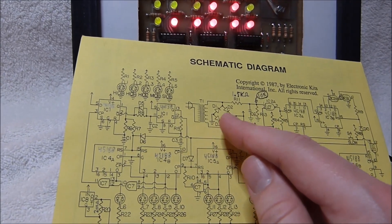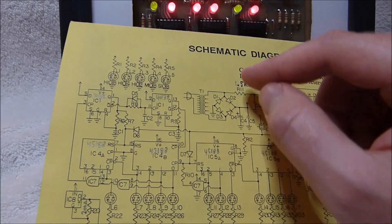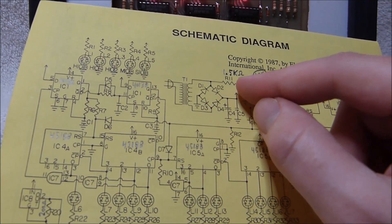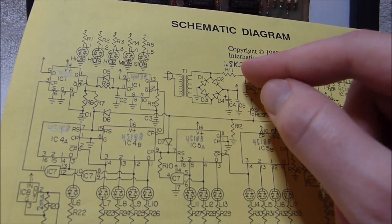This clock uses kind of an unusual power supply setup. The main voltage, or rather the highest voltage, is around 11 volts or so.